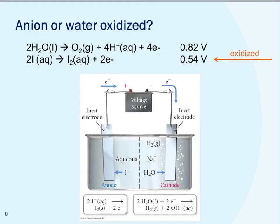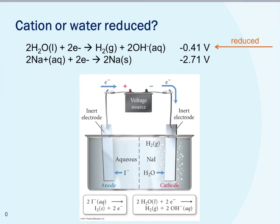Let's look at an example. For water versus iodine at the anode, we're looking at which anion is going to be oxidized. We look for the more negative reduction potential — in this case iodine has the more negative reduction potential, so iodide is oxidized. There may be cases where water has the more negative reduction potential and is therefore oxidized at the anode instead. For the cathode, comparing sodium ion to water, the more positive reduction potential — still negative values, but more positive — belongs to water. So it's actually water that gets reduced, and the sodium ion remains unreacted in solution. The more positive reduction potential is always the species that is reduced.